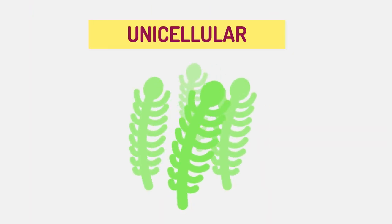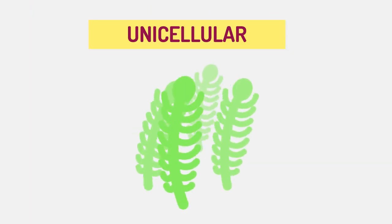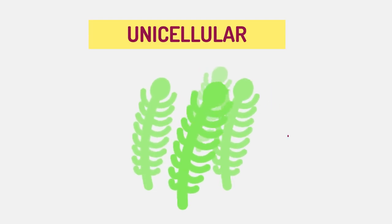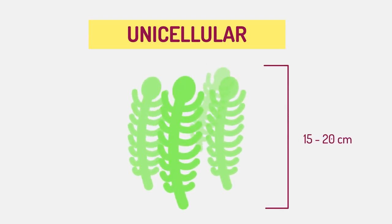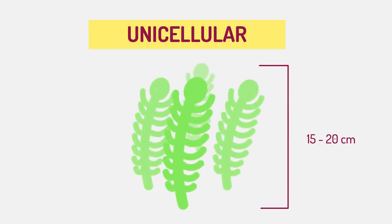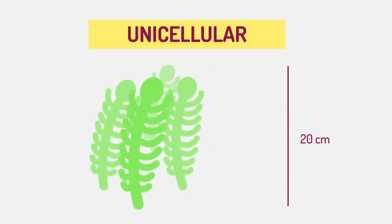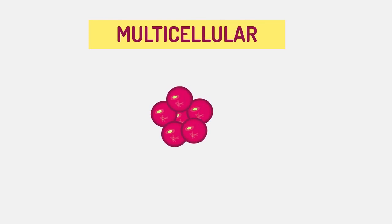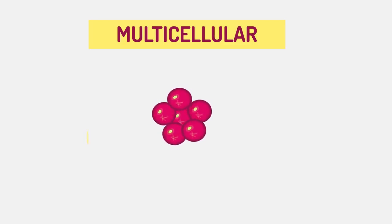But there are some unicellular algae that are about 15 to 20 cm in size. All other organisms are multicellular. They consist of multiple cells and are more complex.